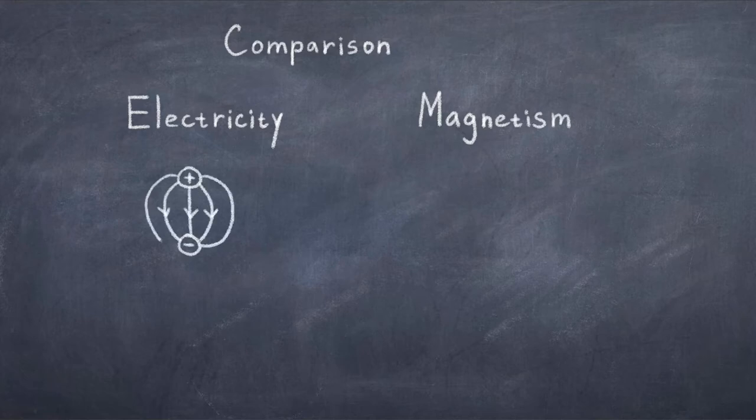Each with two poles. You cannot have an object which only has a north or south pole. You must have both a north and a south pole. This is a fundamental difference.